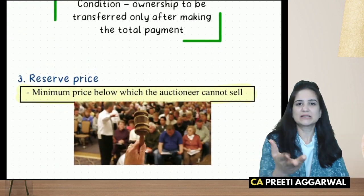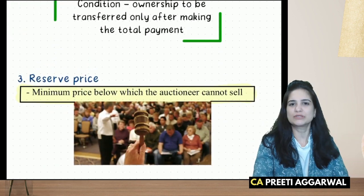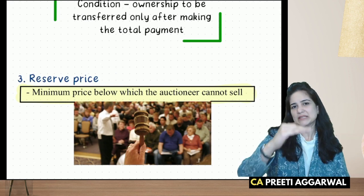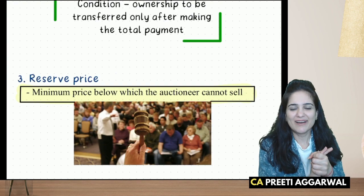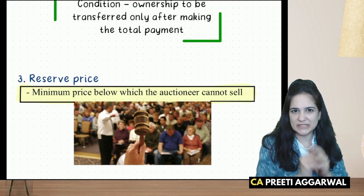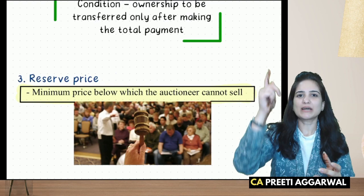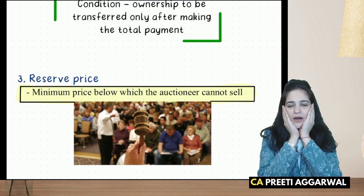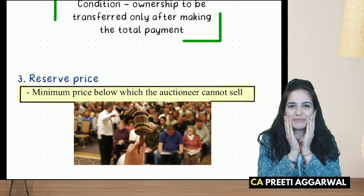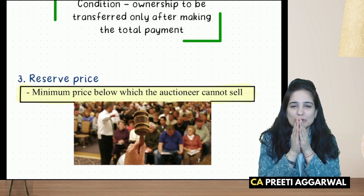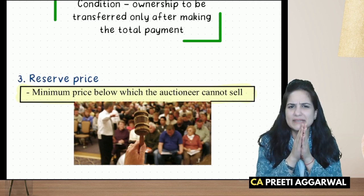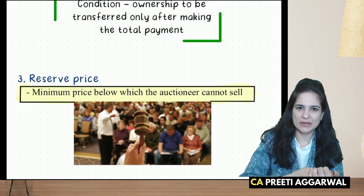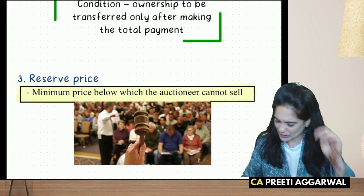Reserve price is the minimum price — the base price from which bidding starts, similar to the base price in IPL auctions. If the minimum price was decided at 50,000 and a bidder says 5,000 and the auctioneer excitedly strikes the hammer saying 'sold,' that is not a valid sale. If the hammer strikes accidentally at below the reserve price, that is not a sale.